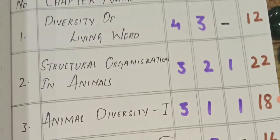Structural Organization in Animals: 3 VSAQs, 2 SAQs, and 1 LAQ, total 22 marks. Very important chapter.